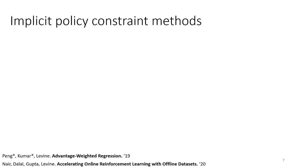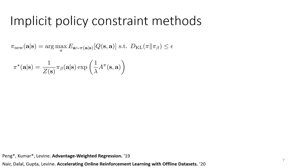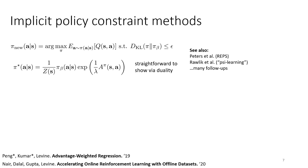One approach that removes the need to explicitly estimate pi_beta is to use implicit policy constraints. Here's our constrained optimization again with a KL divergence constraint. It turns out that if you write down the Lagrangian of this problem and solve for the closed-form solution for the optimal policy, you get a specific equation — straightforward to show by Lagrangian duality. This is a very widely studied idea appearing in work by Peters et al. called REPS and Rollick et al. called PSI learning.